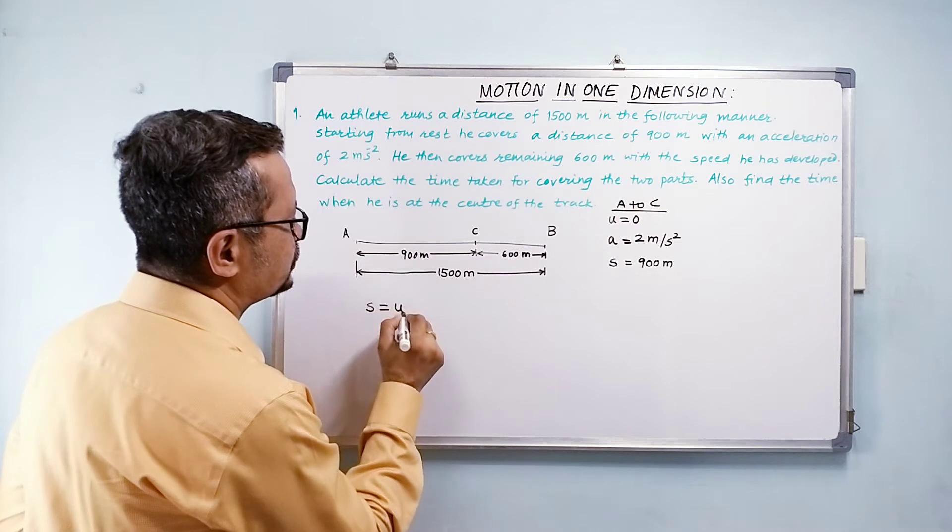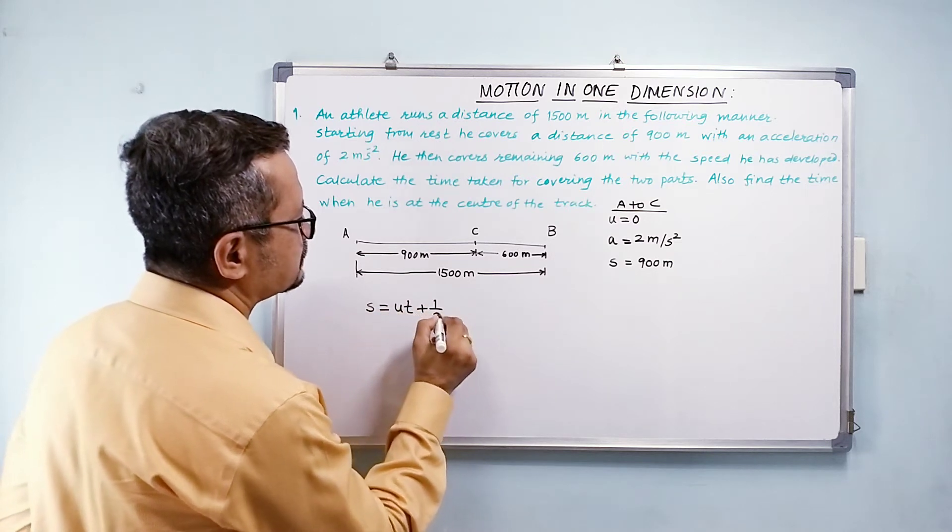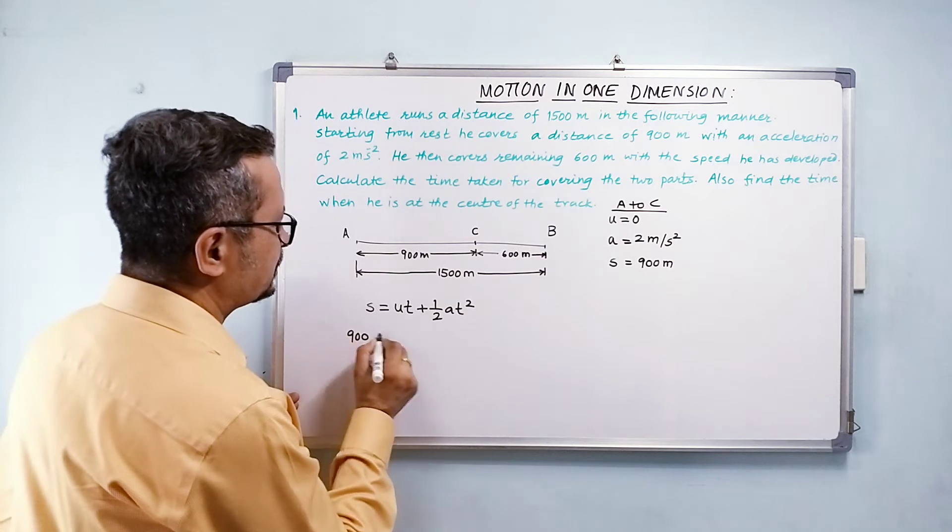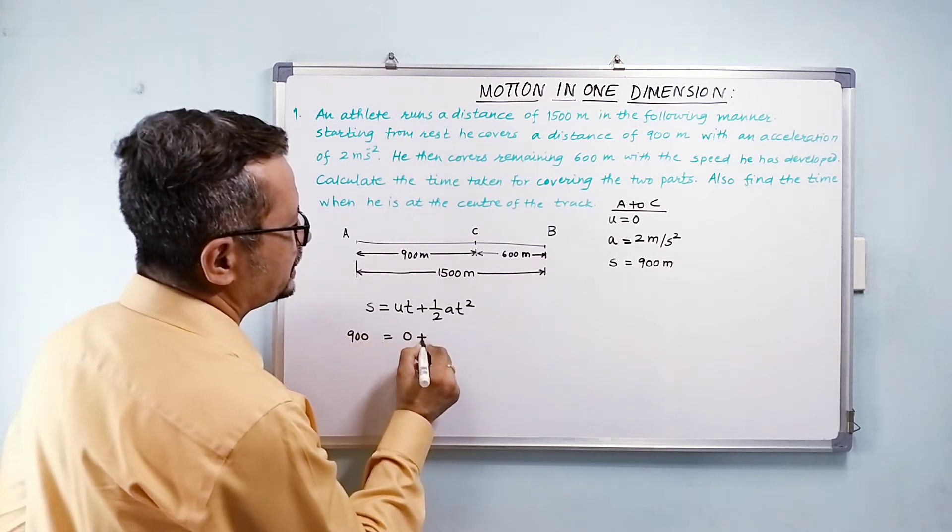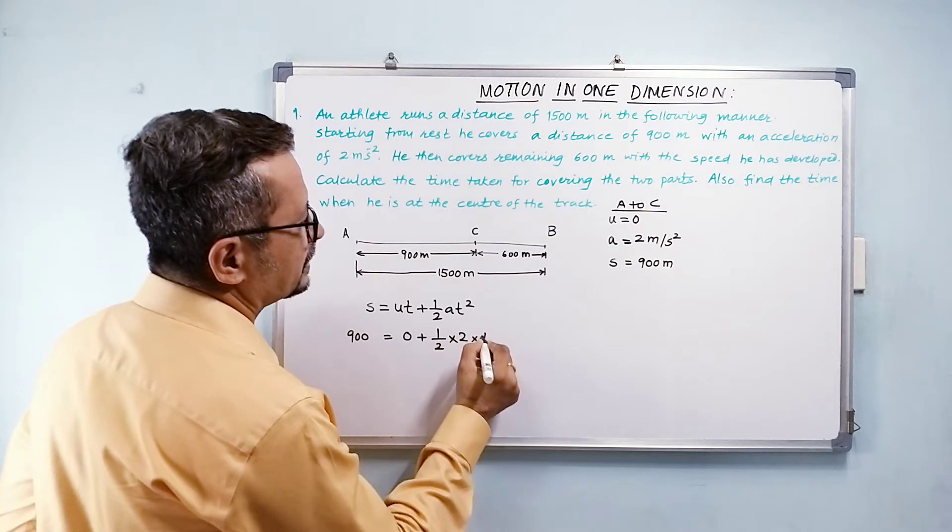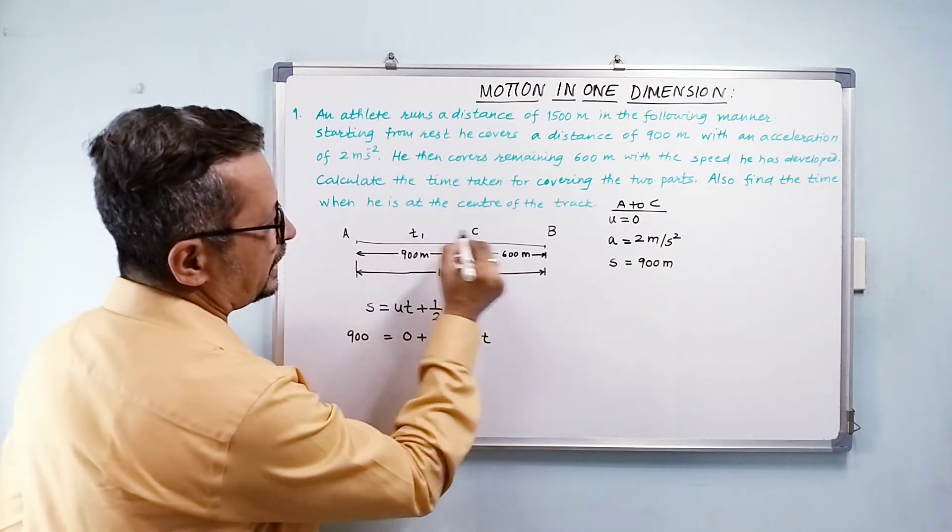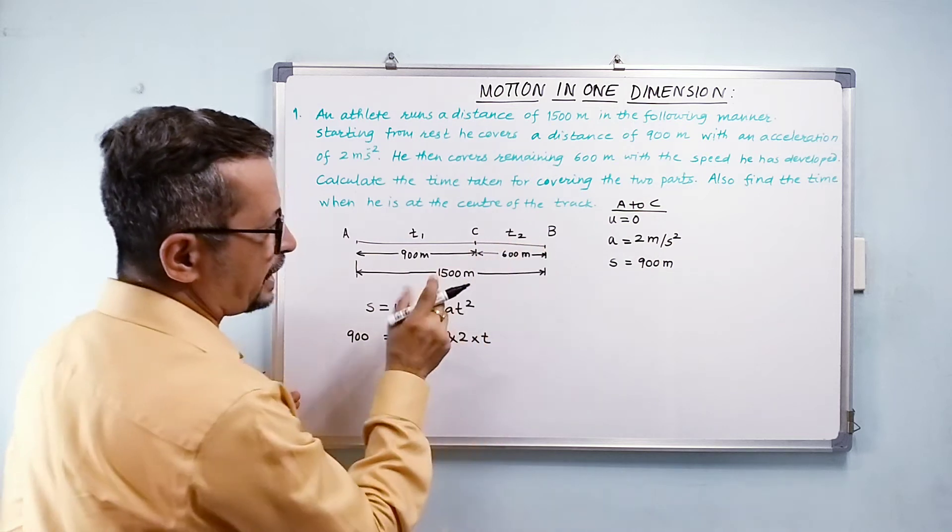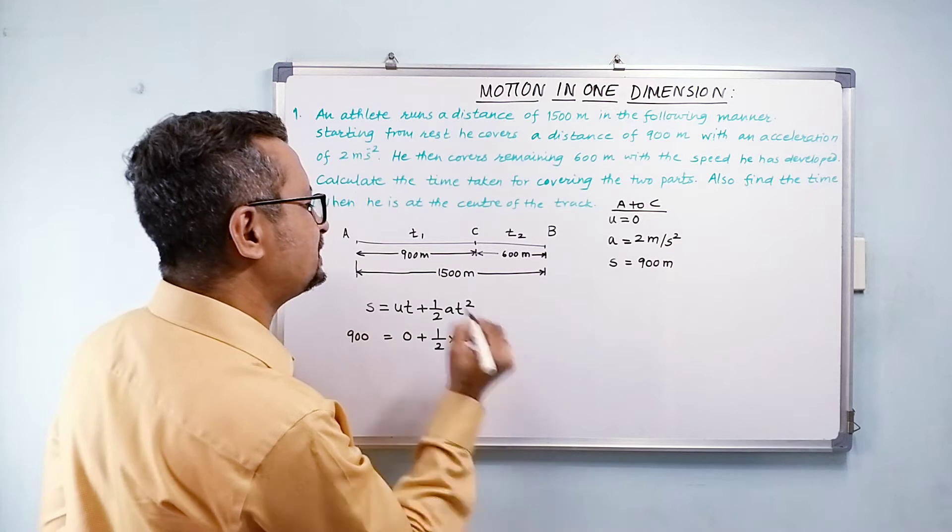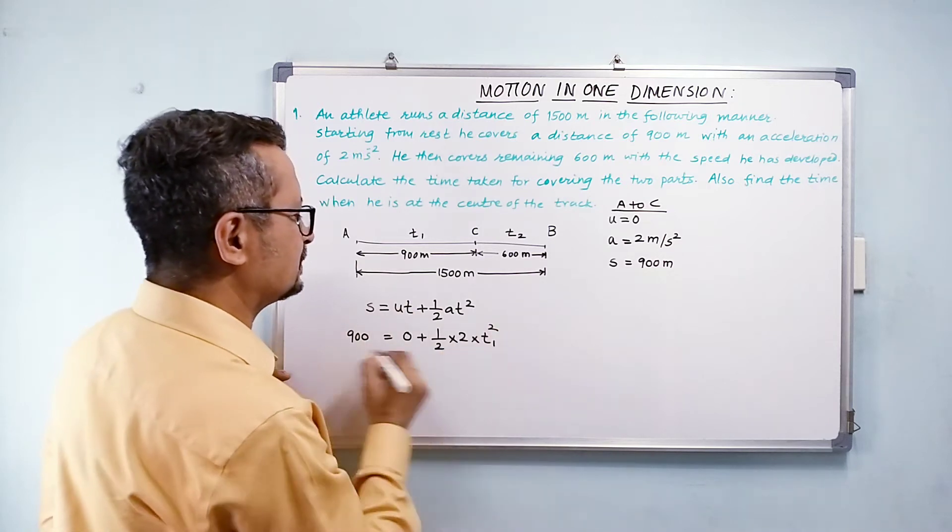So s equals ut plus half at squared. So 900 meters equals 0 plus half into 2 into t squared. I am calling this time as t1 and this time as t2. Time taken from A to C and C to B. So t1 squared.